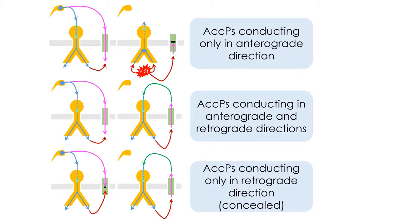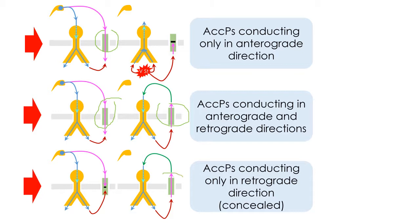As already explained, accessory pathways can conduct only in the anterograde direction, or both in anterograde and also retrograde direction, or finally only in the retrograde direction. These accessory pathways are called concealed because they do not produce ventricular pre-excitation during sinus rhythm, due to the fact that there is no conduction from the atria to the ventricles via the accessory pathway in these patients.